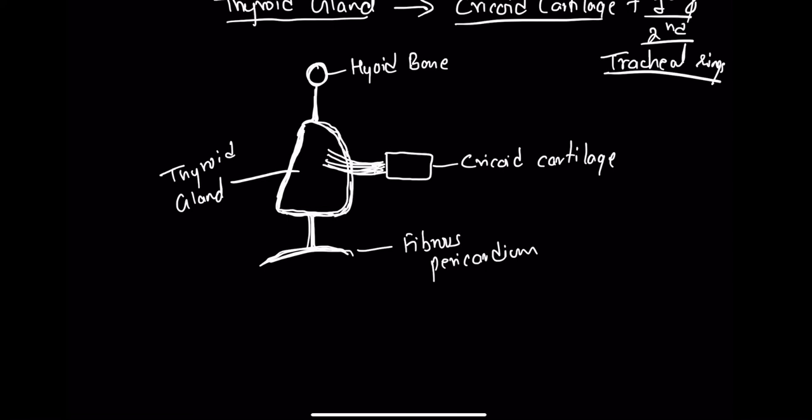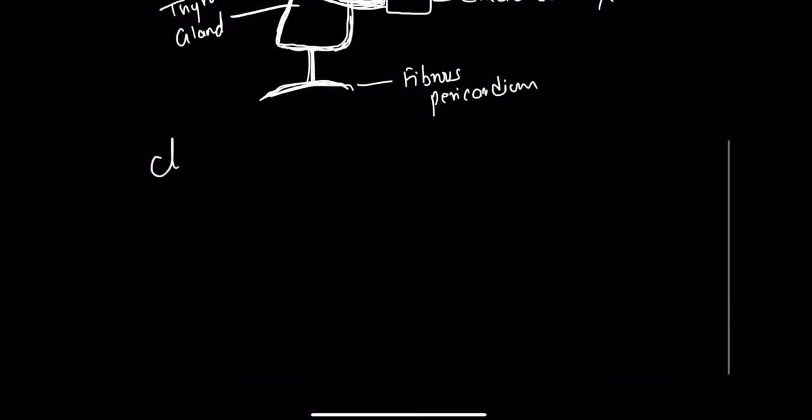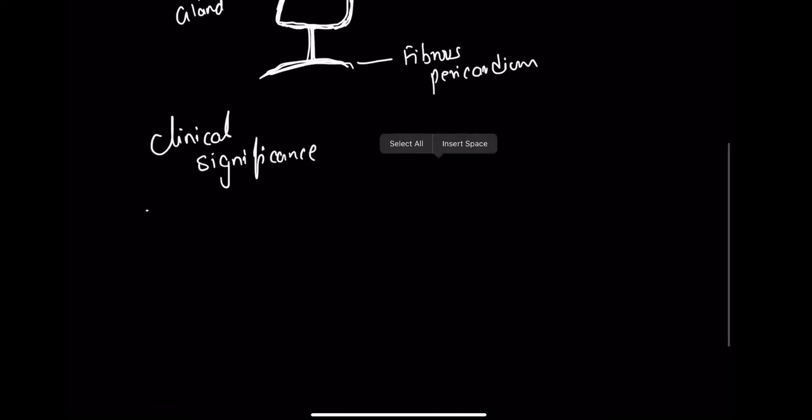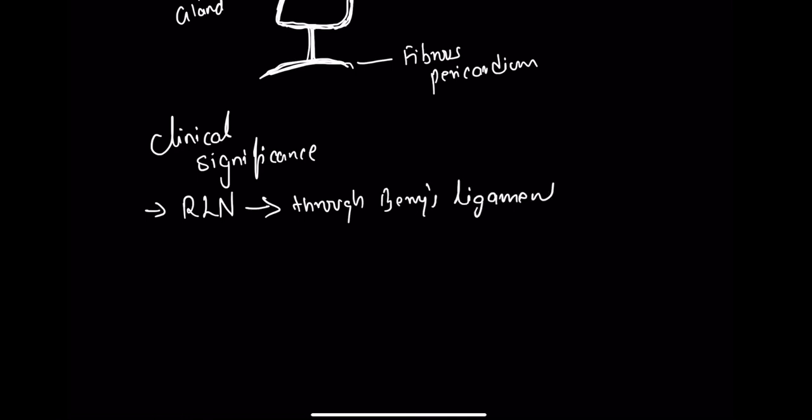The clinical significance of Berry's ligament is that the recurrent laryngeal nerve passes through Berry's ligament. So while doing thyroidectomy or thyroid surgery, we have to be really careful not to injure this nerve, the recurrent laryngeal nerve.